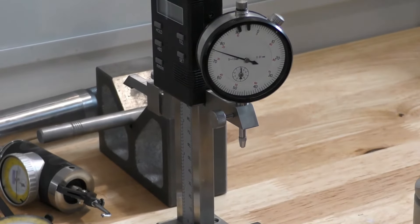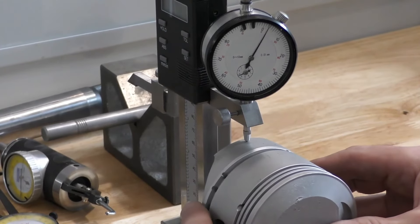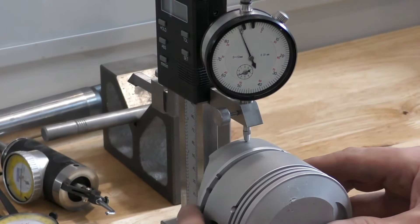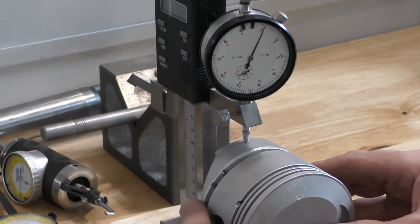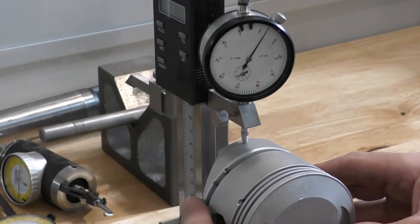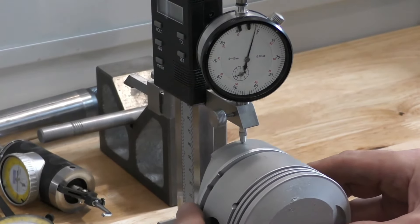Then if I want to compare my second piston and see where it is at in comparison to the same size, I can bring it in and I can see on this particular one that it is actually 0.03 of a millimeter larger than our base setup.